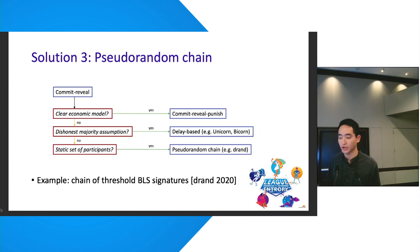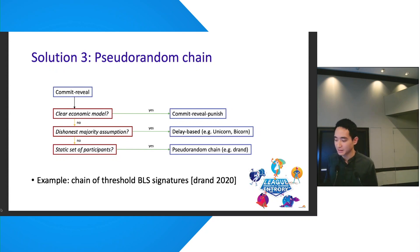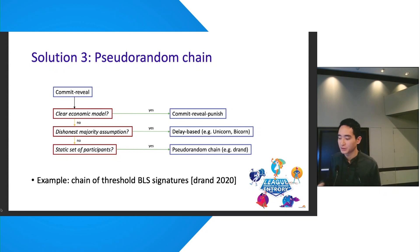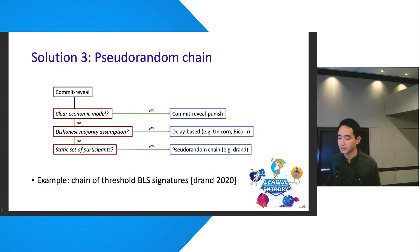A similar approach is used by the blockchain project DFINITY. These pseudorandom chains can be highly efficient but often push their complexity to an initial one-time setup, so the fewer instances of one-time setups needed, the better for these protocols.